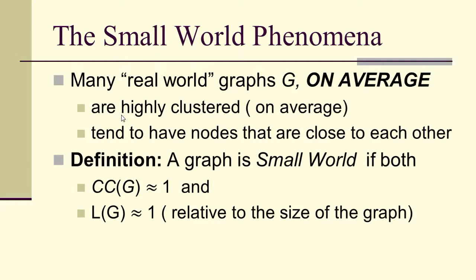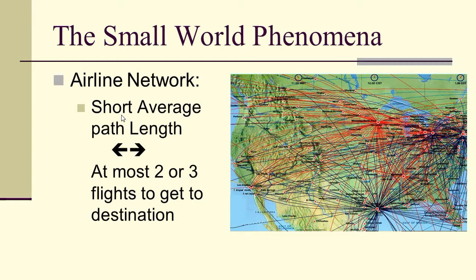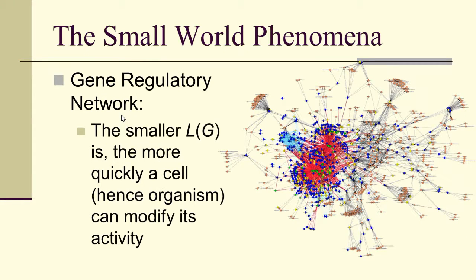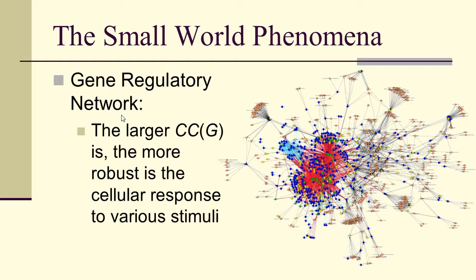Now the small world phenomenon is that many real world graphs G, on average, are highly clustered and tend to have nodes that are close to each other. So we say that a graph is small world if the clustering coefficient of the graph is close to 1, and the path length of the graph is close to 1, relative to the size of the graph. A good example of this are airline networks. There's a short average path length, because there are at most 2 or 3 flights to get from any departure to your destination. They tend to be highly clustered, because most of the flights come out of only a few hubs. A gene regulatory network tends to be small world. The smaller the average path length is, the more quickly a cell, and therefore the organism it's a part of, can modify its activity. The larger the clustering coefficient is, the more robust is the cellular response to various stimuli.